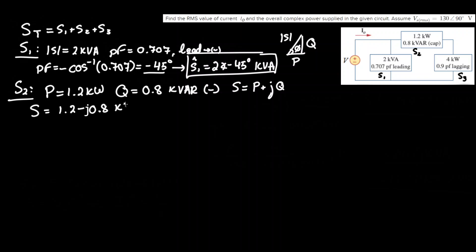For rectangular S equals 1.2 minus, remember that's negative for capacitor, j 0.8 and this would be kVA, however we'd probably want this in phasor format since we all want a common format and that is equivalent to, let's write here, S hat 2 equals 1.44 angle negative 33.69 degrees kilovolt amps.